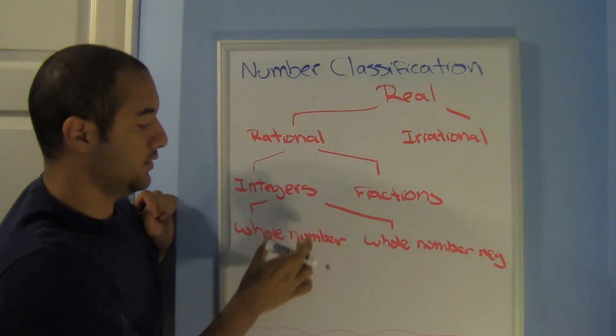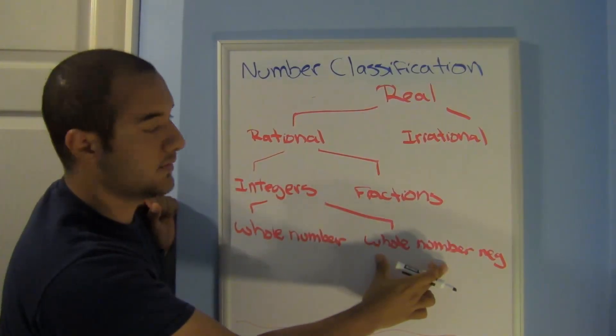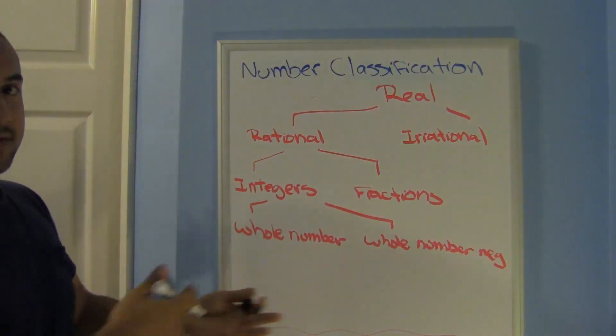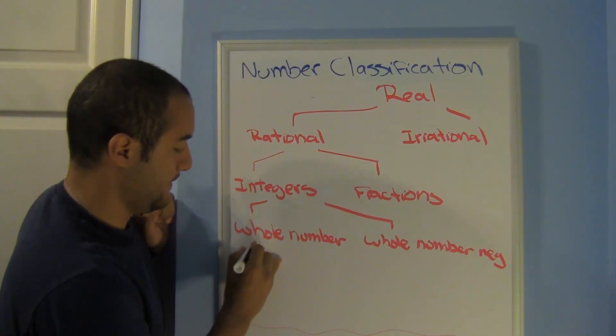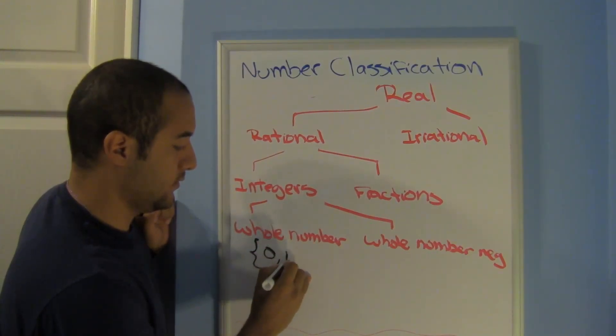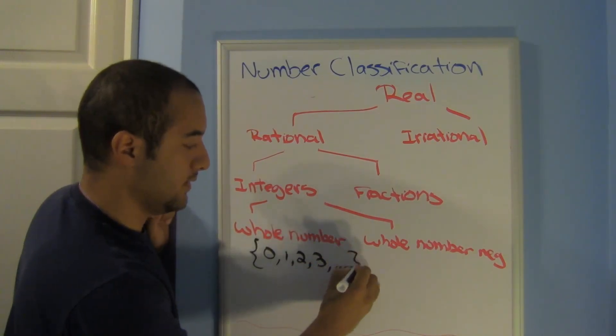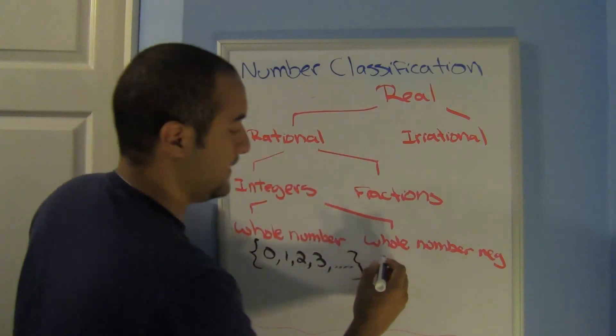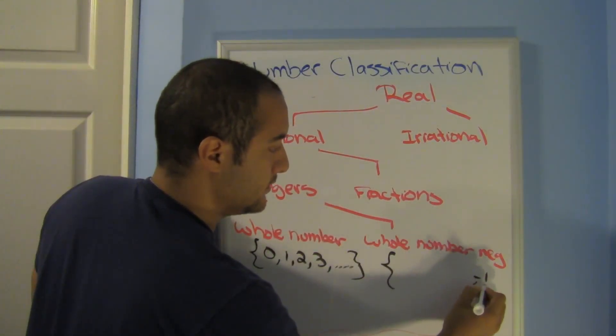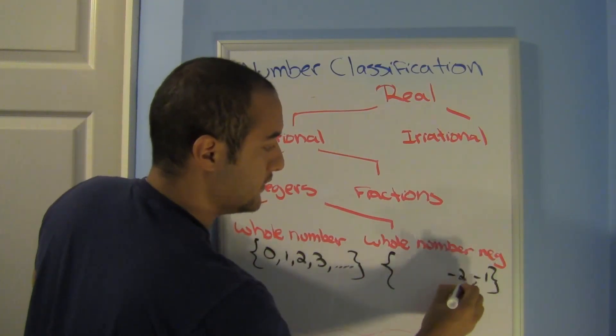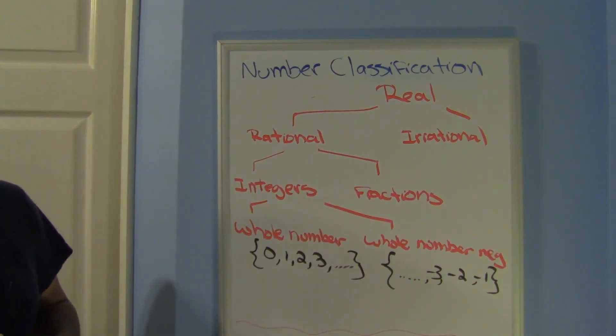Now, breaking up the integers, you have whole numbers and negative whole numbers. So here's where you get your positive and your negatives. Let's write it in set. Here we can say, this is the set 0, 1, 2, 3, so on. And here we would have the set negative 1, negative 2, negative 3, and so on.